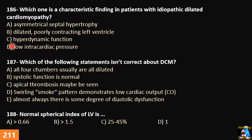Question 187 options: A) all four chambers are usually dilated, B) systolic function is normal, C) apical thrombosis may be seen, D) swirling smoke pattern in color Doppler or 2D demonstrates low cardiac output, and E) there is almost always some degree of diastolic dysfunction.